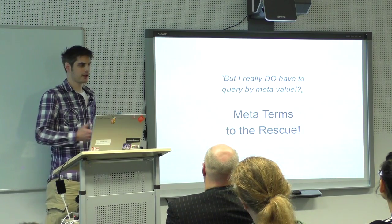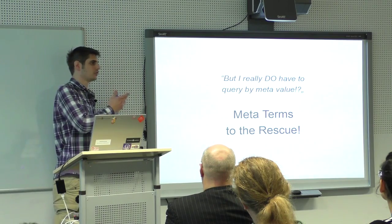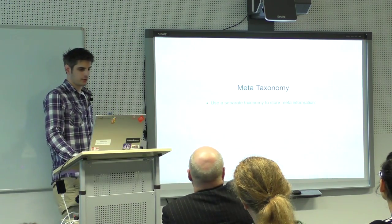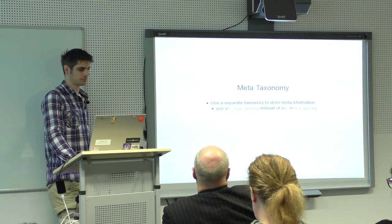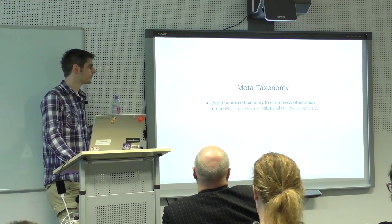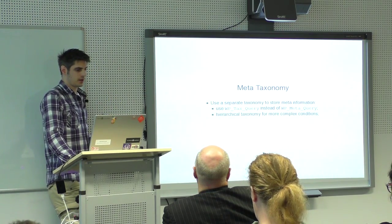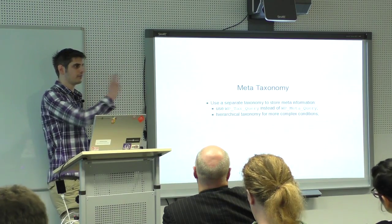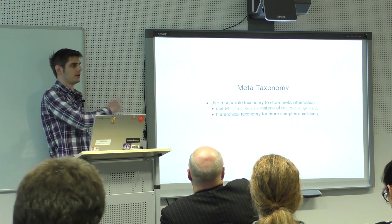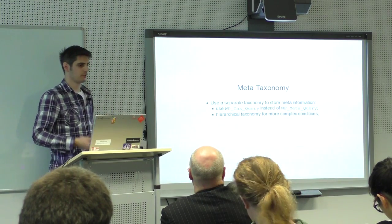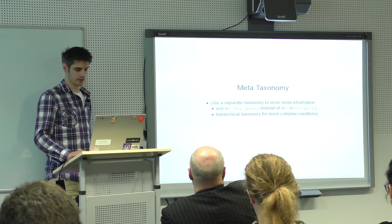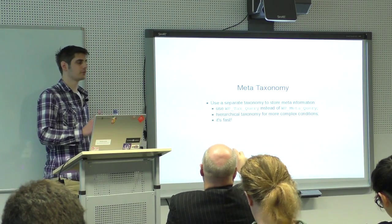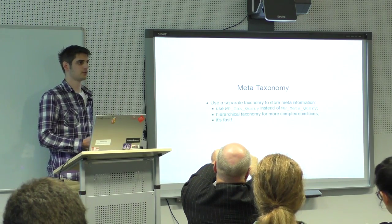Instead, maybe use terms for that. It depends on how I want to work with the metadata. If I want to query posts or users by that value, I can use a new taxonomy to store the metadata information and use the tax query instead of the meta query. We can have complex conditions using a hierarchical taxonomy. And it's fast because everything used here is indexed in the tables — up to three tables are involved, but I'm using only indexed fields, and most of it is also cached.